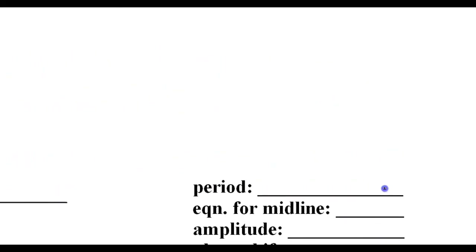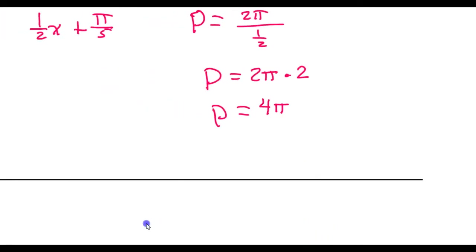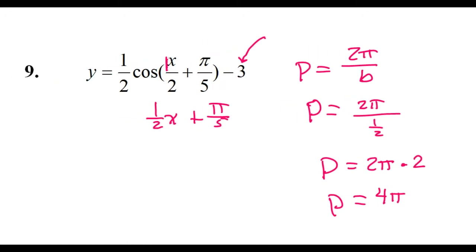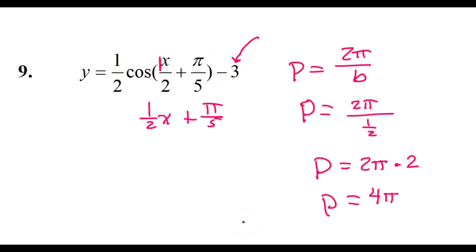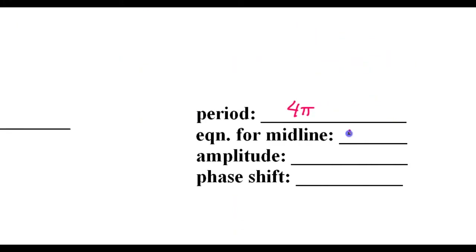Let's record that: period is 4π. Now, how about the midline? The midline is going to come from that minus 3 part of the equation. That's really a vertical shift down 3, which causes the midline of our function to drop 3. So the midline will be y = −3.